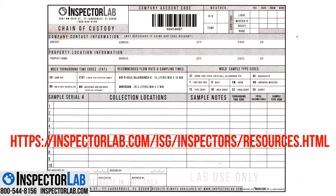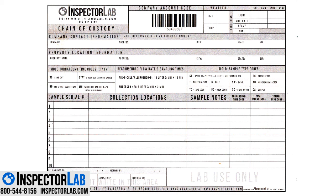A chain of custody form tracks the sample history from making an appointment, collecting the samples, specifying what kind of samples were taken and when, and confirmation of the samples arriving at Inspector Lab. The chain of custody is your record of events and sample handling.